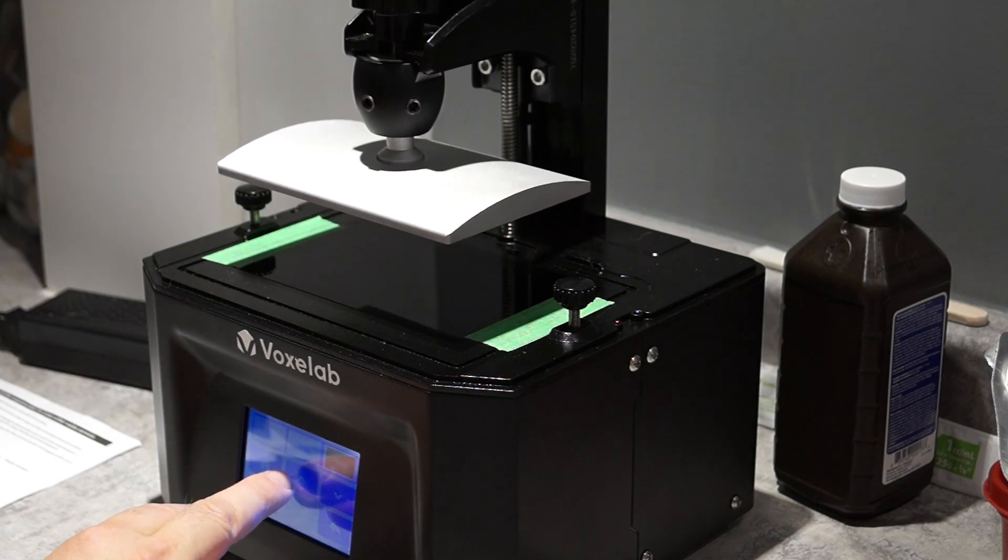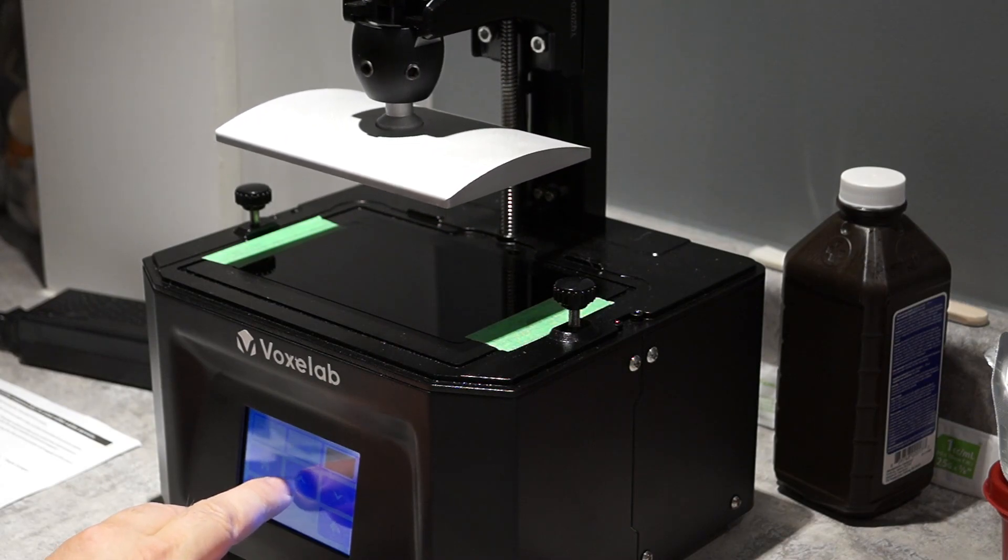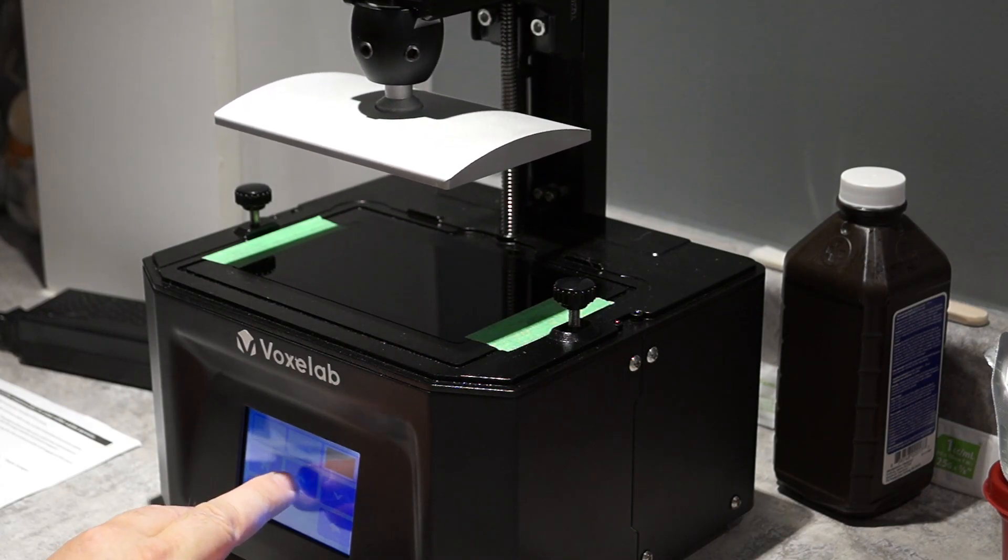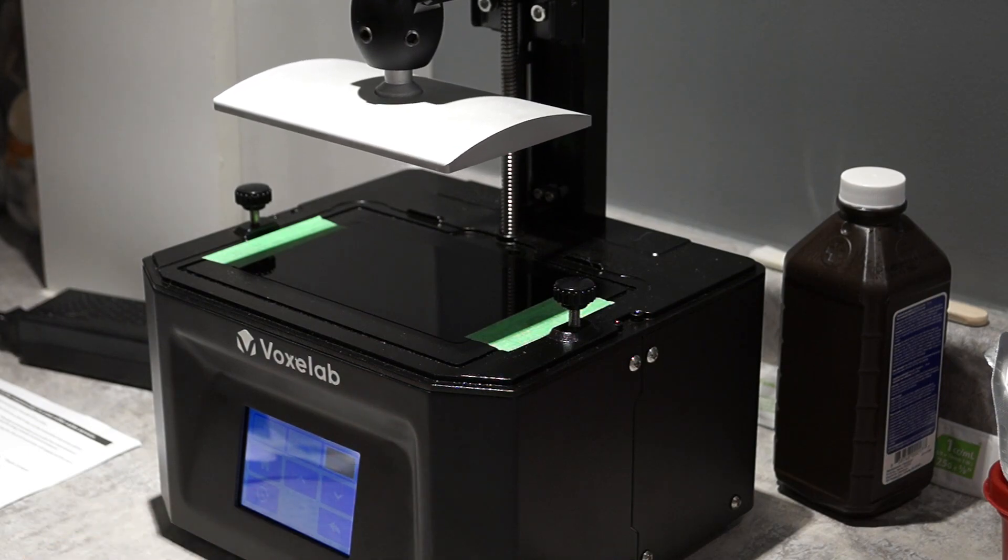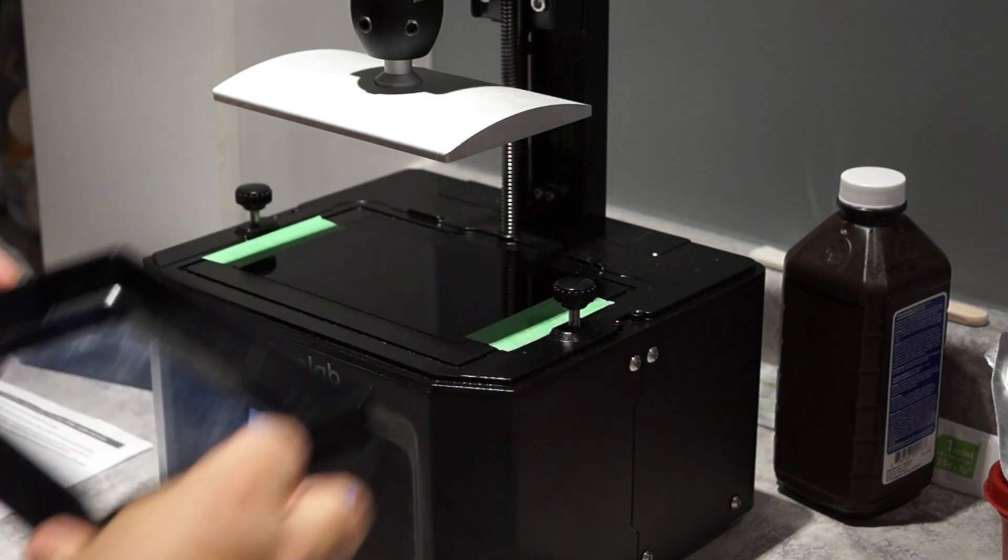What I'm doing here now is adjusting the z-axis so I can fit the build vat and screw it in to make sure that it fits properly onto the printer as you can see what I'm doing here. Now it just slides in.